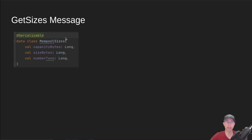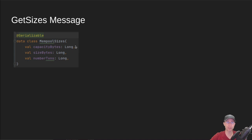The get sizes message comes back as raw CBOR, but this is the unpacked version of it. It comes back with a capacity in bytes — so how big is the mempool? That's one thing that's not currently in the Prometheus metrics, as far as I know. We also get back size in bytes and number of transactions.